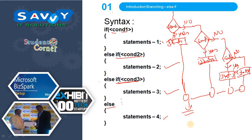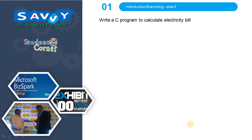Now we are moving to the examples. We will explain two examples: one is the electricity bill and the second is the class obtained by a student. In the next video we will discuss the grade of a subject and the roots of the quadratic equation. For the electricity bill, I need to write the table again — I am not using service charge here, just number of units and rate per unit.